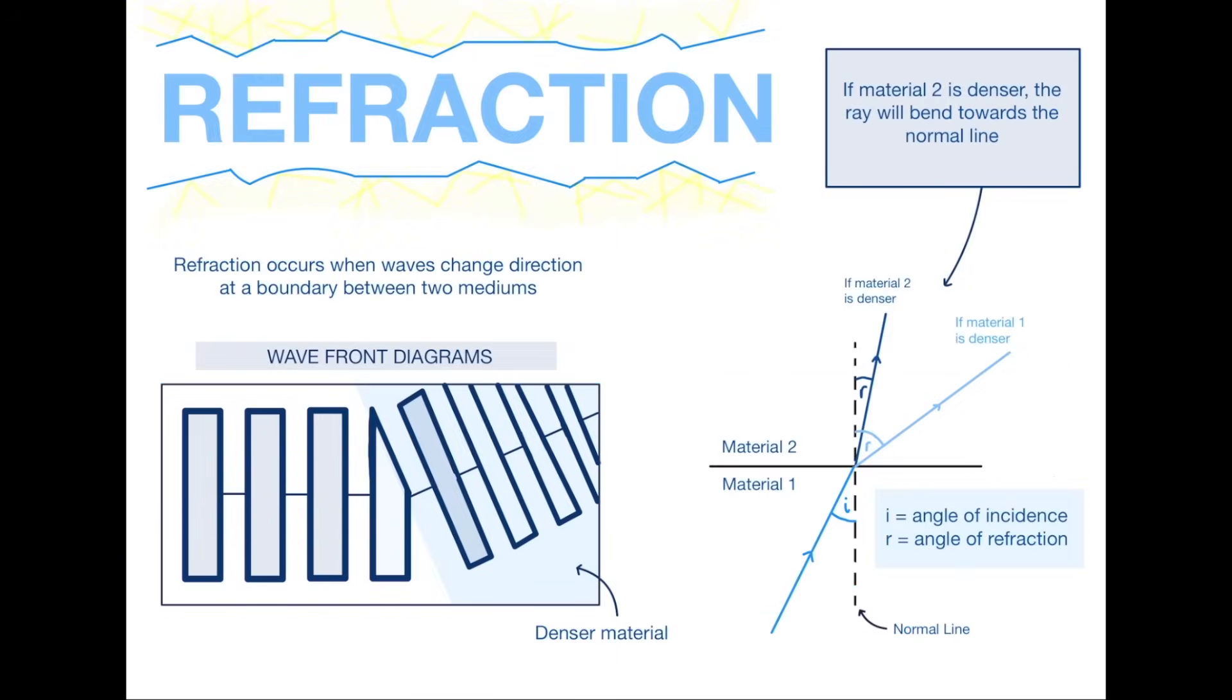Moving on to refraction. Don't get this confused with reflection. Reflection is simply when it bounces off a flat surface, but refraction is typically when waves change direction at a boundary between two mediums, as you can see in the definition I've written. There are two ways to show this. A wave front diagram, which you may have seen before—make sure you remember that this is called a wave front diagram because often in exams I didn't remember what it was and lost marks on that.